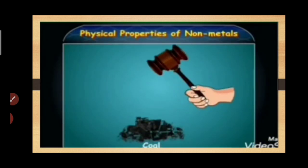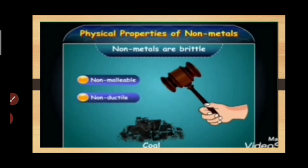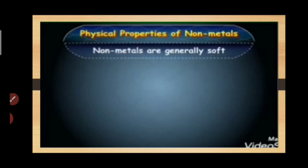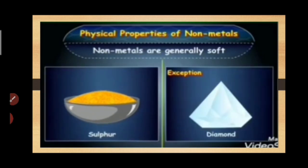Nonmetals generally break when beaten. They are brittle in nature and neither malleable nor ductile. Nonmetals are generally soft, for example sulphur, but diamond is the nonmetal which is very hard.